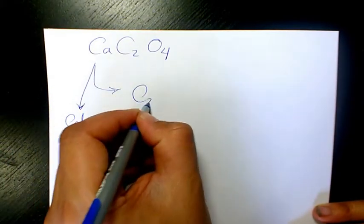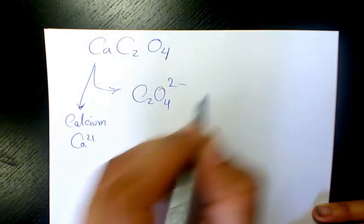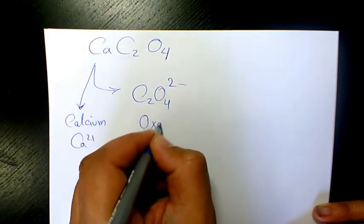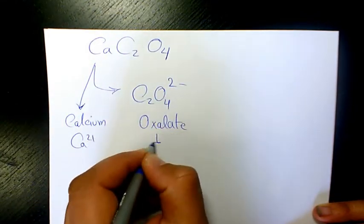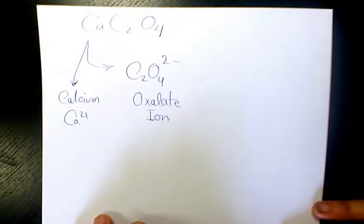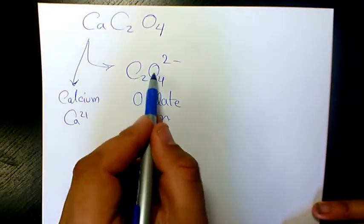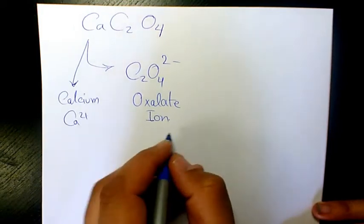here we have a polyatomic ion which is C2O4 2-. That's called oxalate ion. So Ca2+ and C2O4 2- make calcium oxalate.